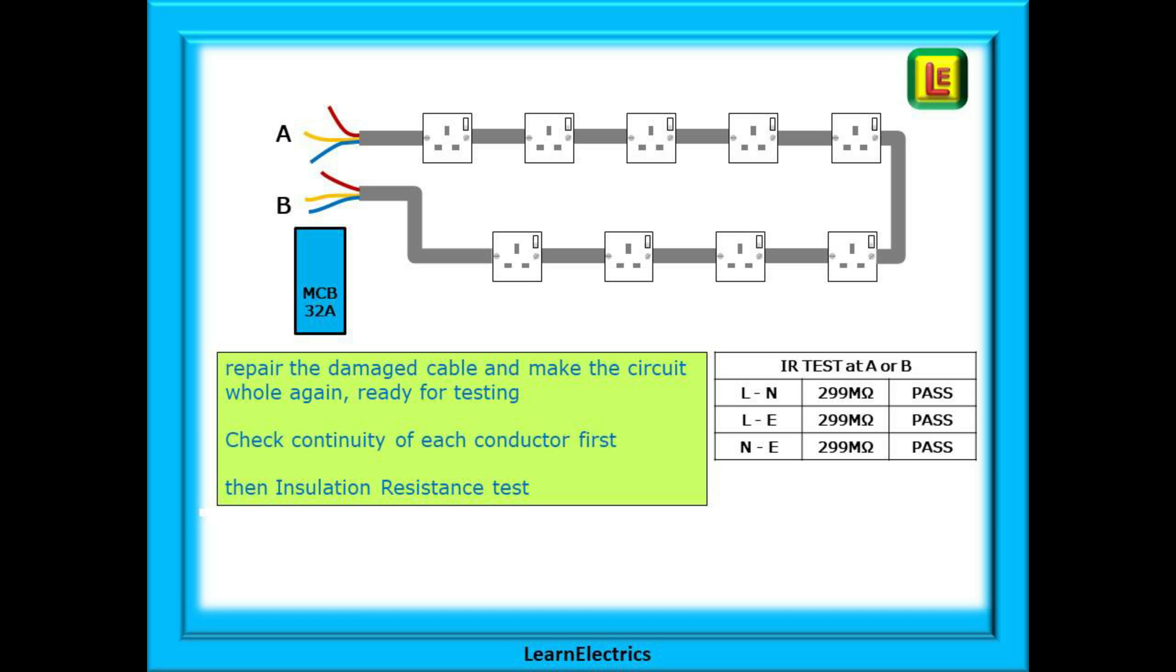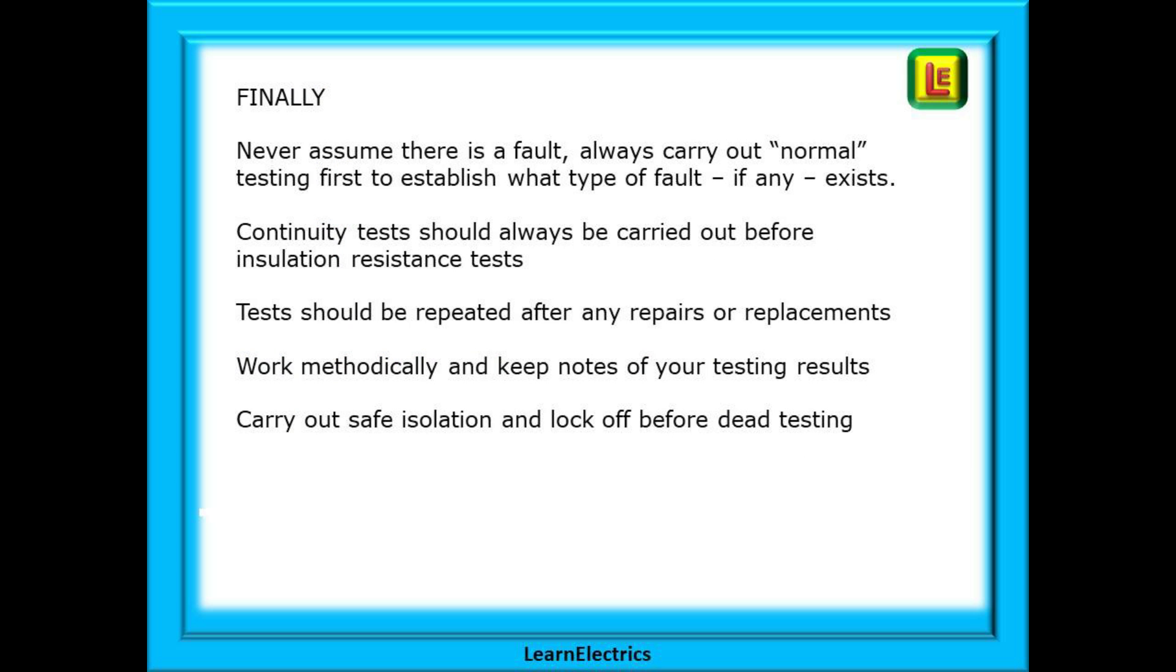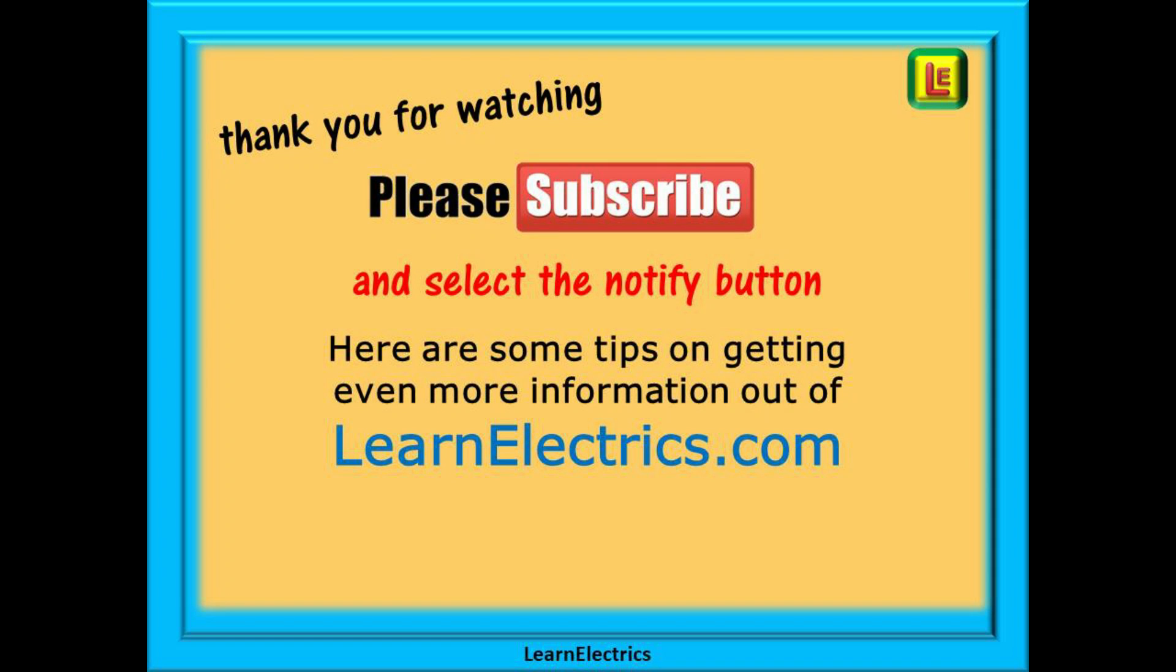And there we are. We hope that you found this video useful and that you have learnt a little more. Never assume there is a fault—always carry out normal testing first to establish what type of fault, if any, exists. Continuity tests should always be carried out before insulation resistance tests. Tests should be repeated after any repairs or replacements, and work methodically and keep notes of your testing results. Always carry out safe isolation and lock off before dead testing.